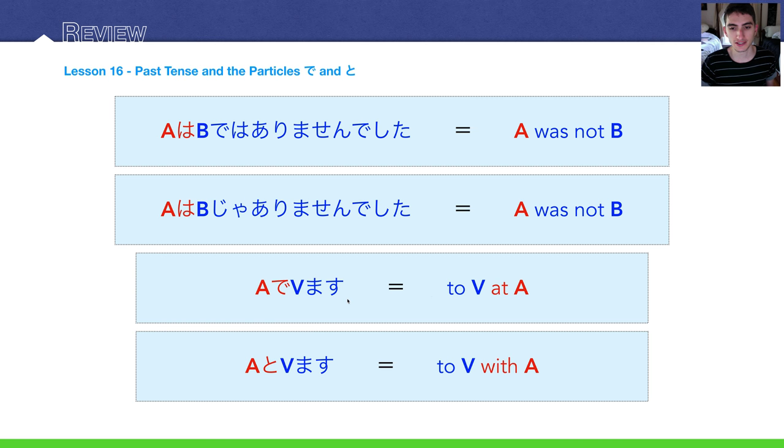When you have regular verbs that aren't desu, you can use the particle de to indicate where that action was taken. So, if you study at the library, you would use de, toshokan de, benkyou shimasu.